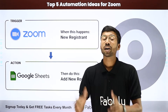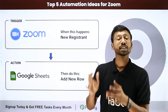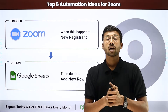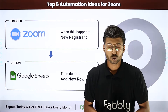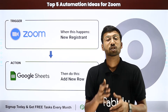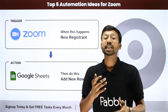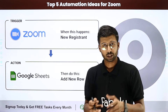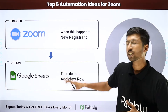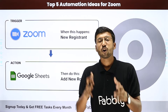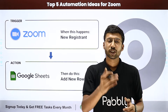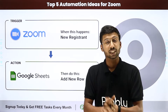In this way, you can have a complete record of all the details and data of registrants joining your Zoom meeting. You can also create an automation to log the joining and leaving time of each participant. Using an automation between Zoom and Google Sheet, you can get data like at what date and time a user joined the meeting and at what time they left.